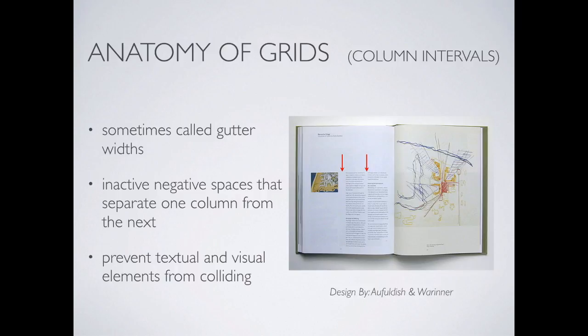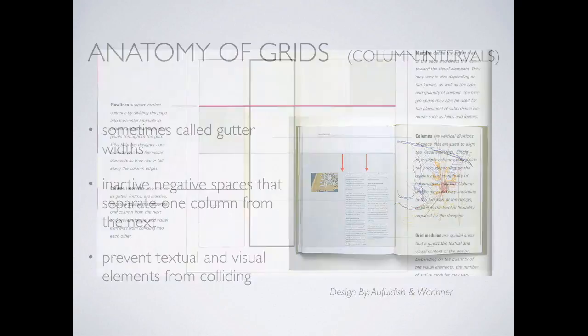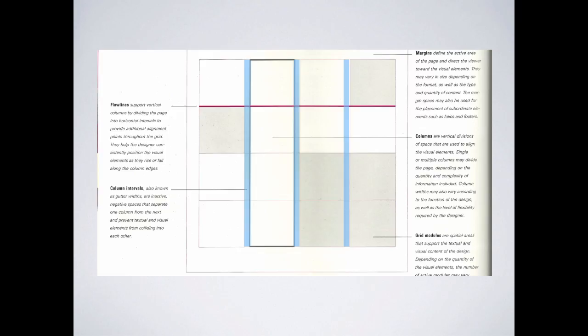Then we move into column intervals — sometimes these are called gutter widths. It's essentially the space between the columns. If one column ran into the next column with no space between, it would be really confusing. If you imagine a paragraph of text in one column with no space between it running into a paragraph in the other column, you wouldn't know where to stop your sentence. So the gutter intervals are absolutely critical to give us that spacing and to prevent visual elements from colliding.